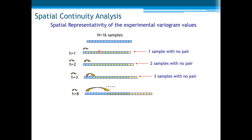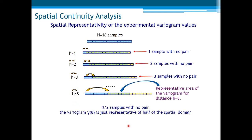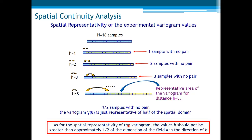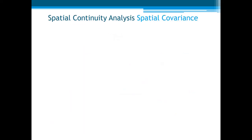In other words, the variogram was calculated with just those 8 samples, which are represented here by the green area. In short, the spatial representativity of the variogram values decrease as the lag distance increases. As for the spatial representativity of the variogram values, the values h should not be greater than approximately one half of the dimension of the field in the direction h. Of course, this is a rule of thumb.